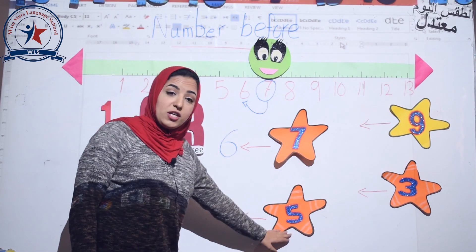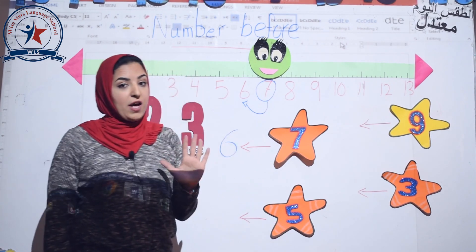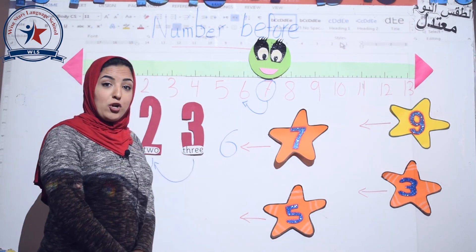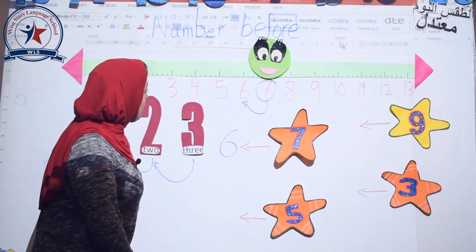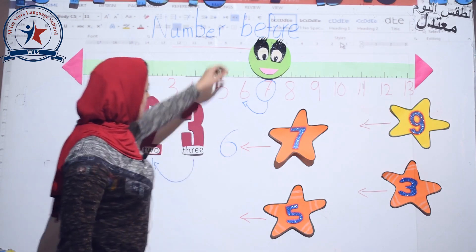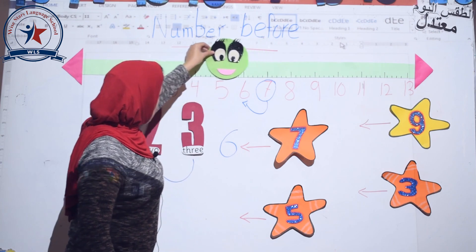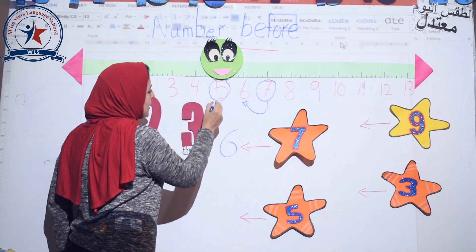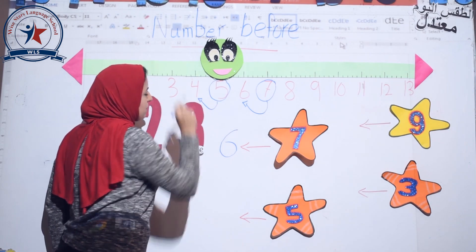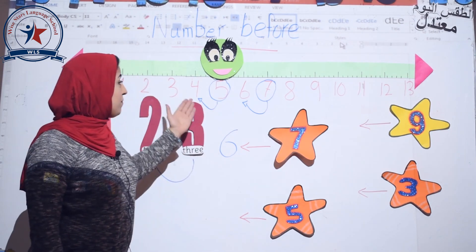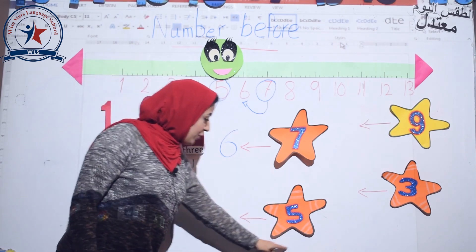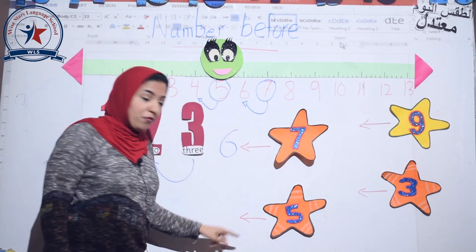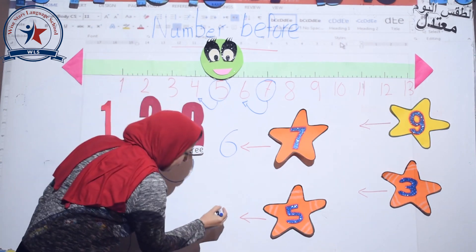Another one. What is this number, KG? Five. Let's ask Mr. Number Line to help us. Mr. Number Line, where is number five? It's here. Circle number five. What is the number that comes before? Number four. So before number five, number four. Let's write four.